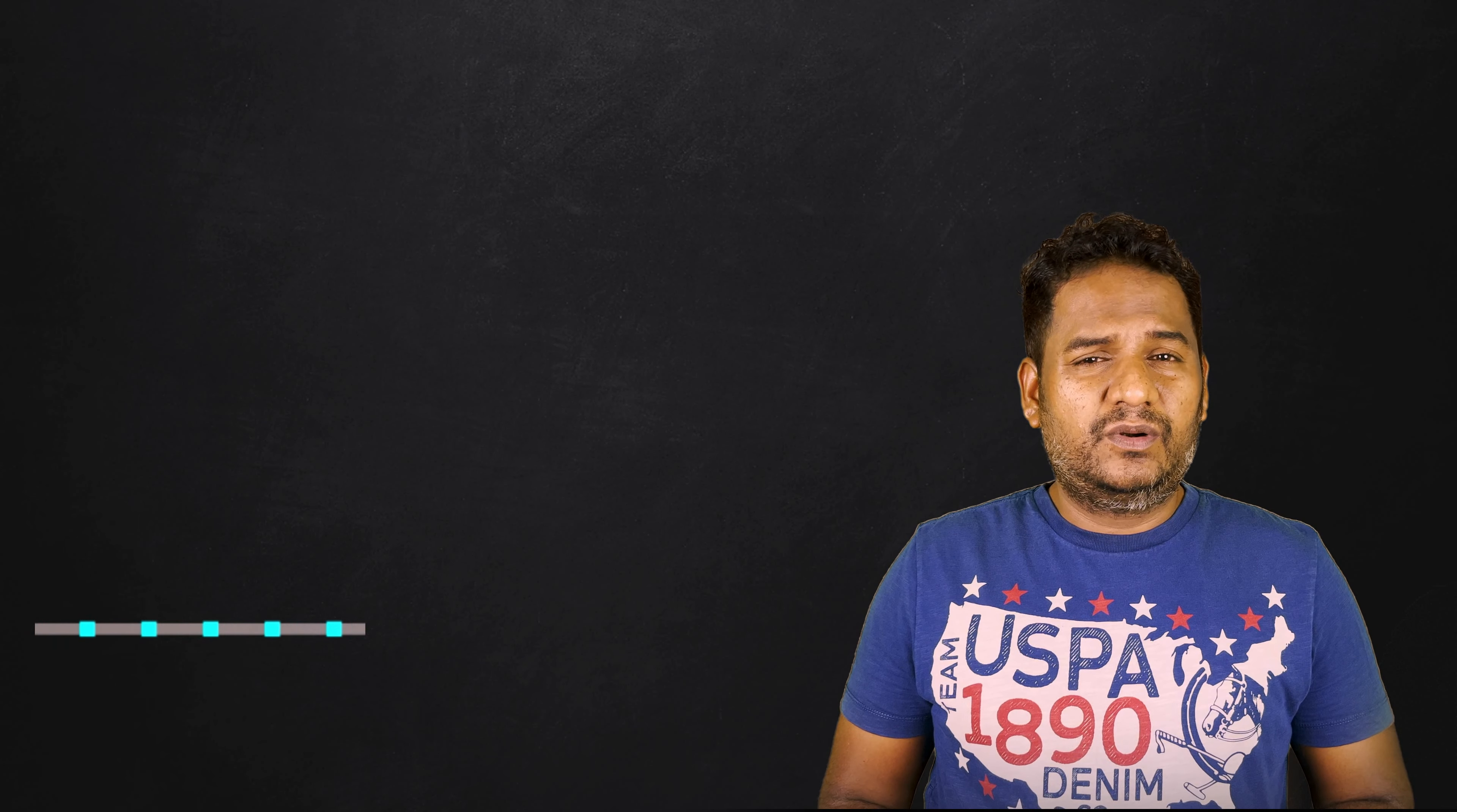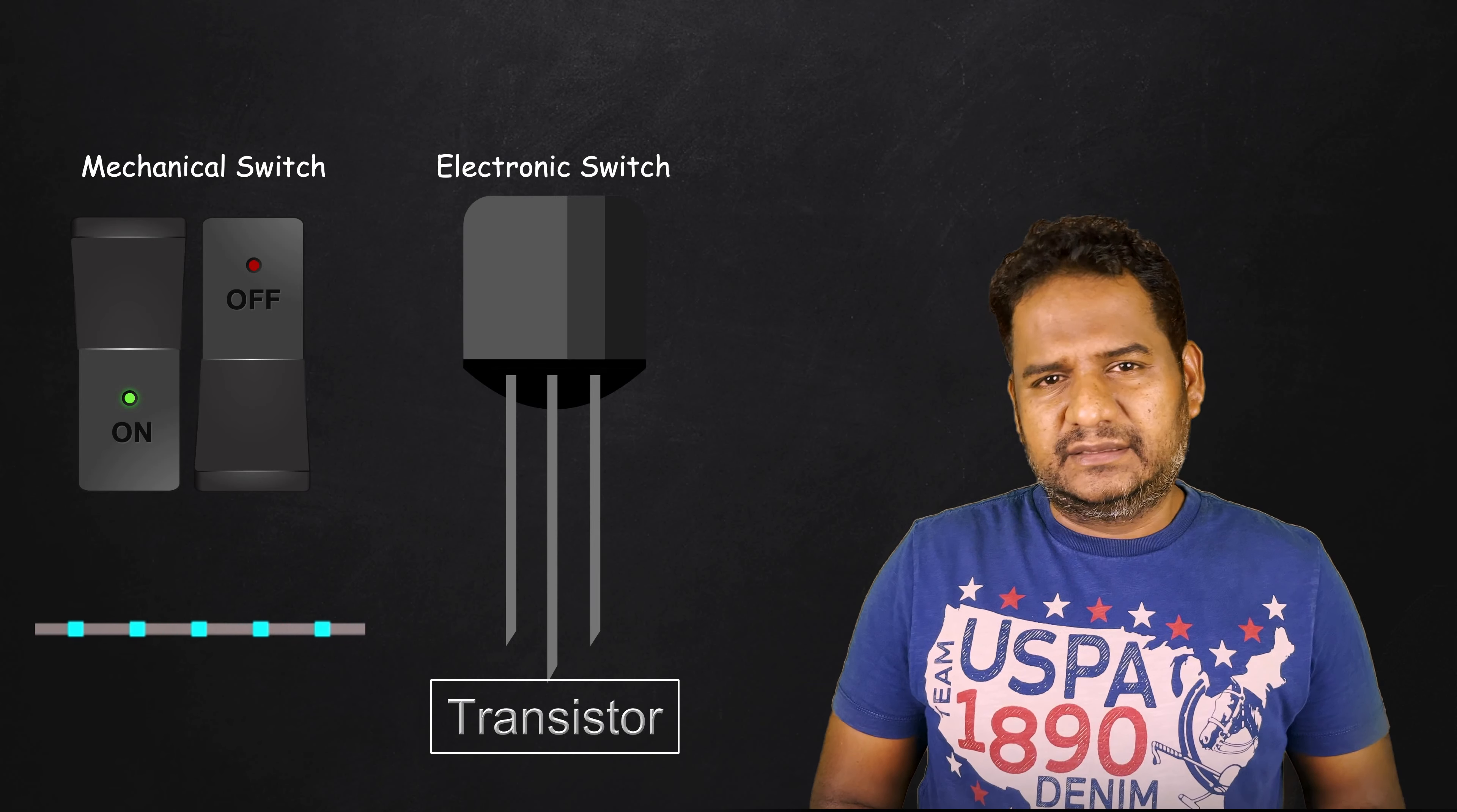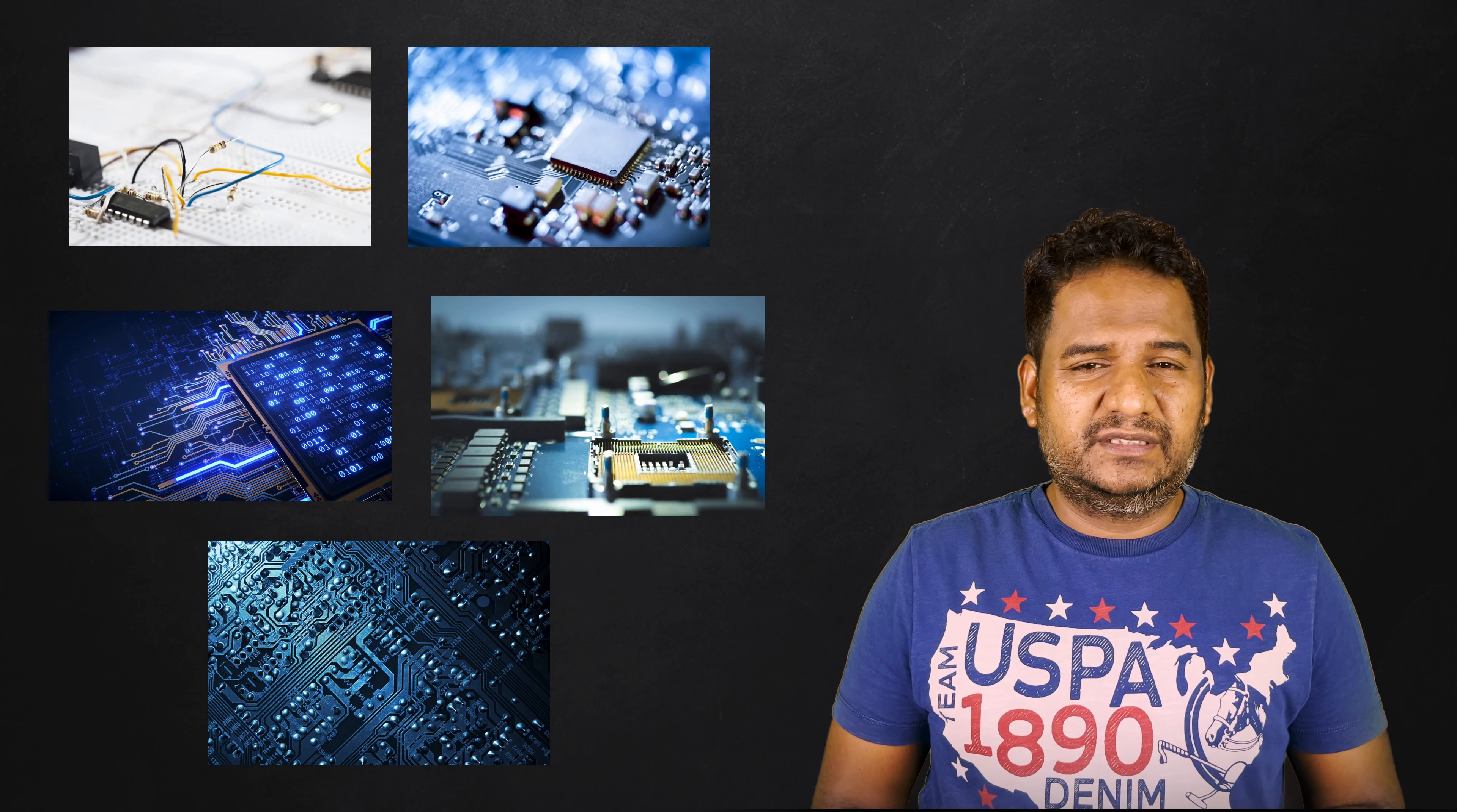Can the flow of current be controlled? Yes, obviously, using mechanical switches. That's what we do in our homes to turn on or off a device. Is there any other way to control the flow of electric current? Yes, using transistors, which are made up of semiconductors. A transistor can be seen as an electronic switch. Every computer and smart device is made up of millions of transistors.